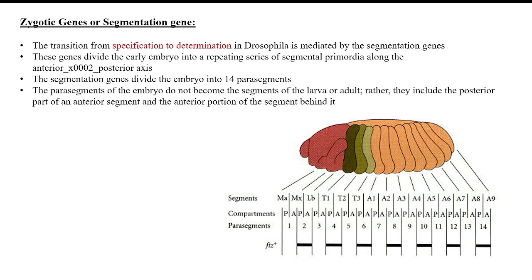The second type of segmentation gene is pair rule genes. Just like gap genes, if pair rule genes have a mutation, then the segment pairing is defected. We have seen in the last video lesson how the fly embryo, the Drosophila embryo, is segmented. The segmentation genes we discussed are responsible for segment formation, and gap genes play a key role in that segmented pattern.